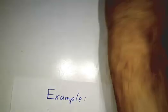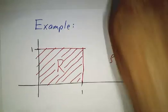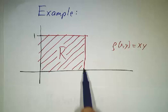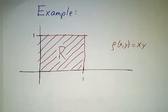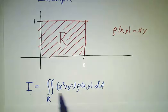So let's work an example. Our example is the one we looked at before for center of mass. It's the unit square with density equal to xy. So we just have to do the integral. The integral of (x² + y²) times the density dA.